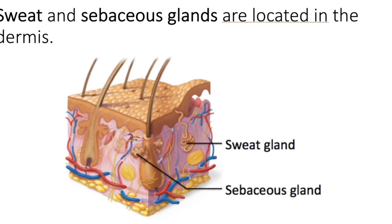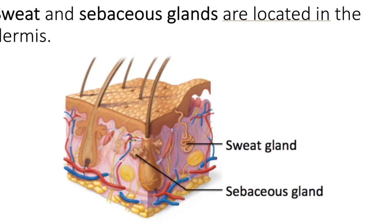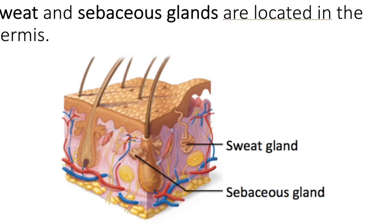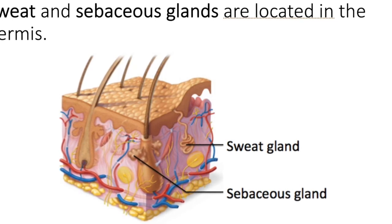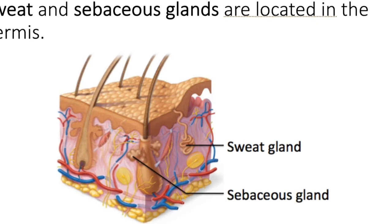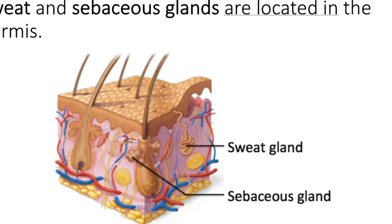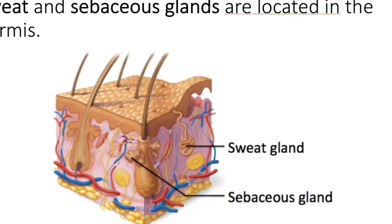Now, there are two types of sweat glands: eccrine glands and apocrine glands. The eccrine sweat glands are your common sweat glands. They are located all over the body and they produce sweat — that salty, watery substance that is used to cool the body.